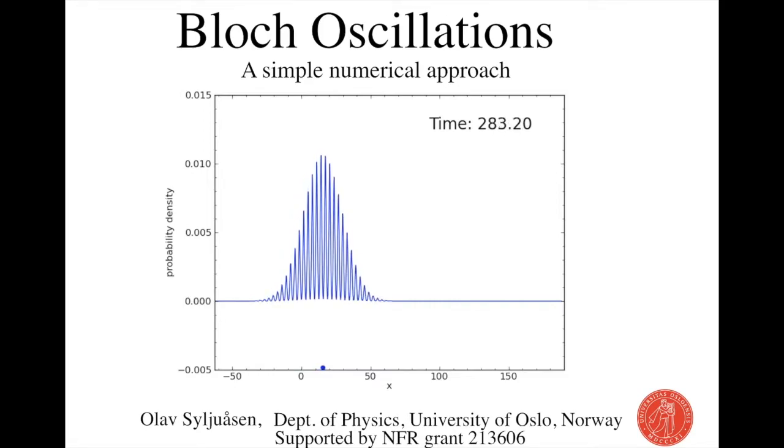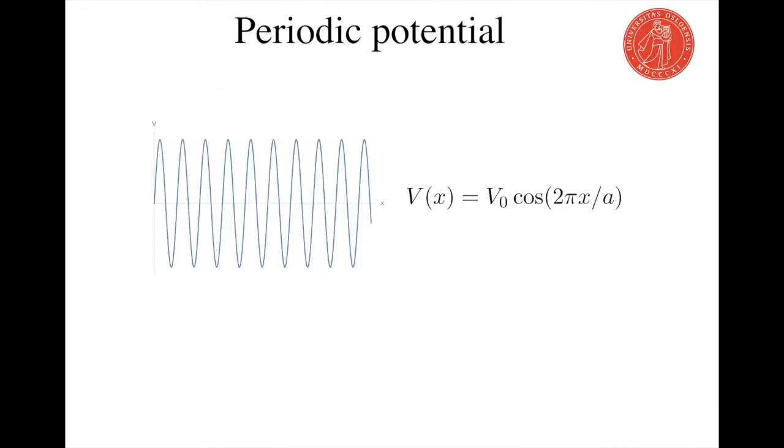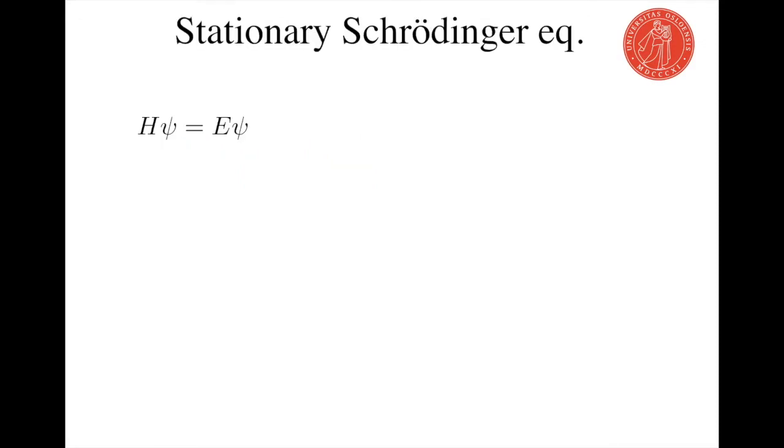To demonstrate this, I first need to explain to you some basic quantum mechanics of a particle in the periodic potential. Let's take the potential to be a simple cosine and write down the one-dimensional stationary Schrödinger equation. Here it is.